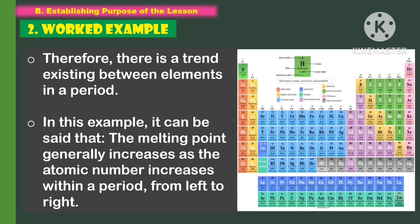Therefore, there is a trend existing between elements in a period. In this example, it can be said that the melting point generally increases as the atomic number increases within a period from left to right.